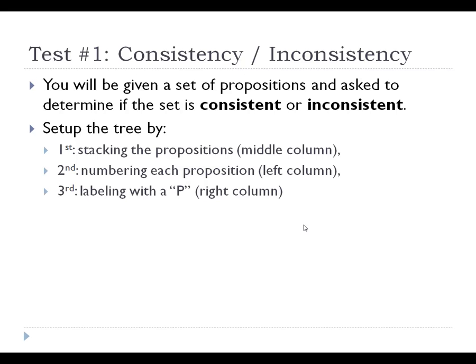The simplest test is the test to determine whether or not a set of propositions is consistent or inconsistent. If asked whether a set of propositions is consistent or inconsistent, the way you set up the truth tree procedure is to begin by stacking the propositions, creating three columns, and in the middle column simply writing each proposition on an individual line. You'll want to number these propositions so you have a way of indexing or referring to them, and label each one with a P to indicate it's part of the set you're testing.